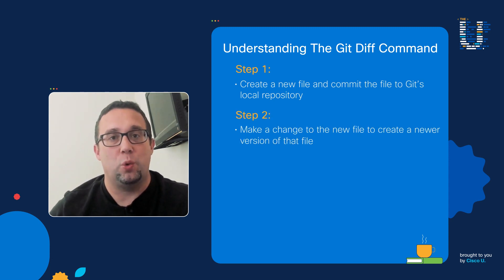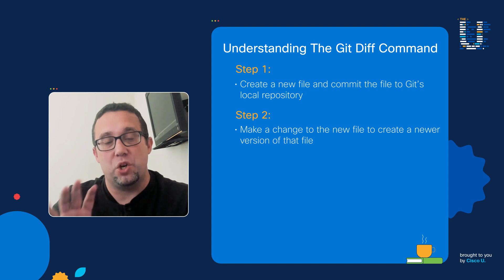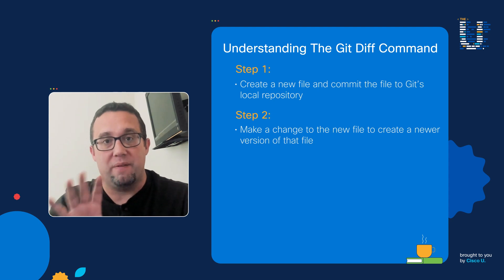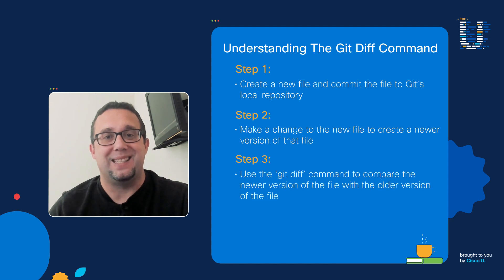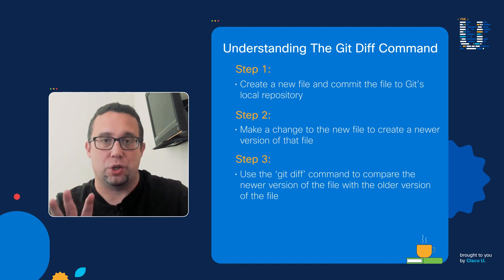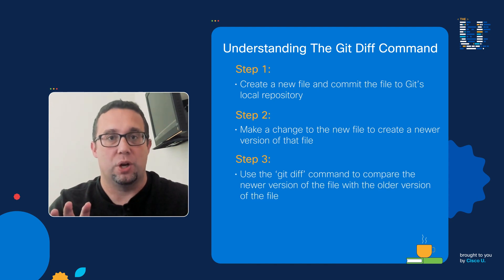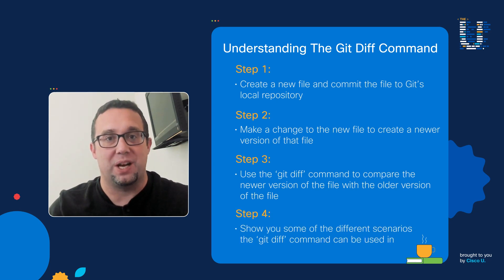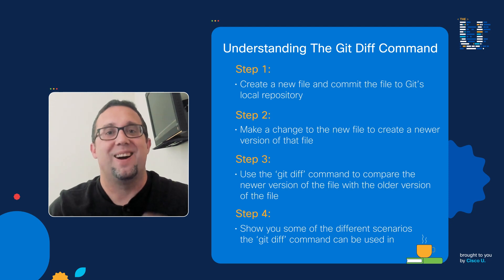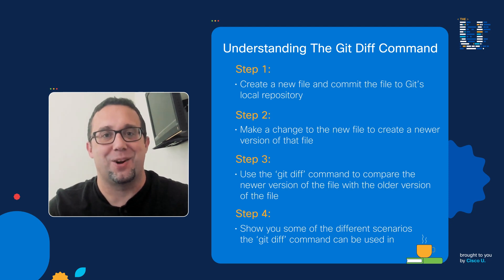In step number two, we're then going to create a newer version of that same file. In step number three, we're going to use the git diff command to compare the newer version of the file to the older version of the file. And finally, in step four, I'm going to show you some different scenarios that you can use the git diff command in. All right, let's get started.